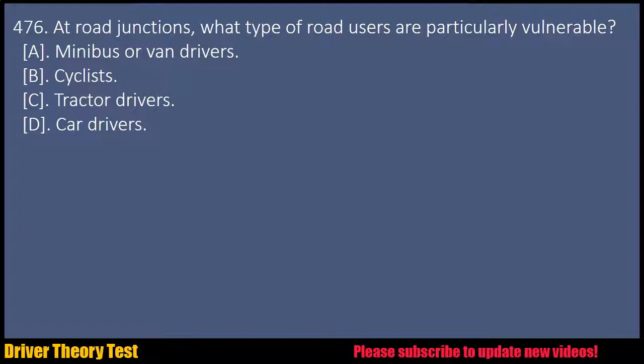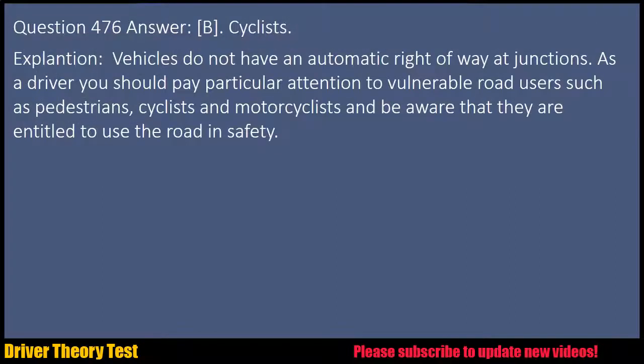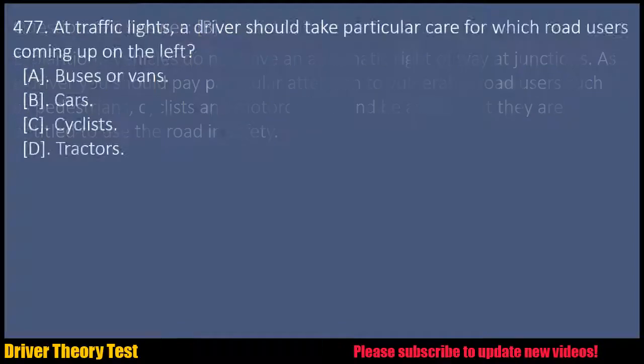Question 476: At road junctions, what type of road users are particularly vulnerable? A. Minibus or van drivers. B. Cyclists. C. Tractor drivers. D. Car drivers. Answer: B. Cyclists. Explanation: Vehicles do not have an automatic right-of-way at junctions. As a driver you should pay particular attention to vulnerable road users such as pedestrians, cyclists and motorcyclists, and be aware that they are entitled to use the road in safety.